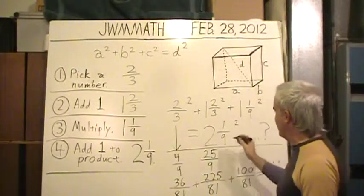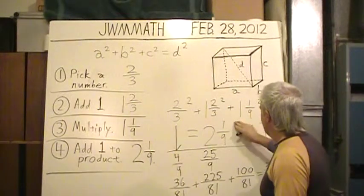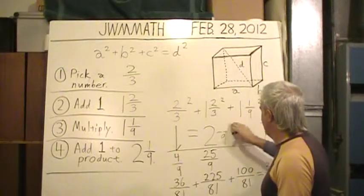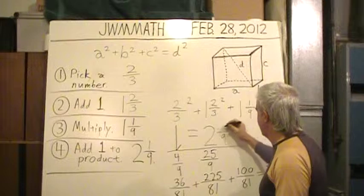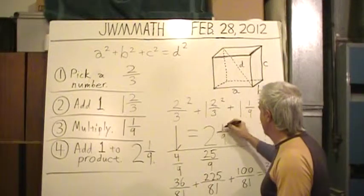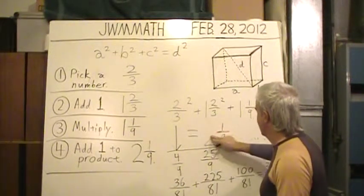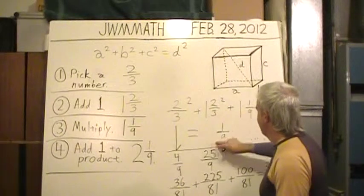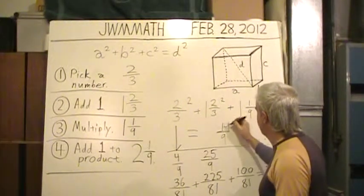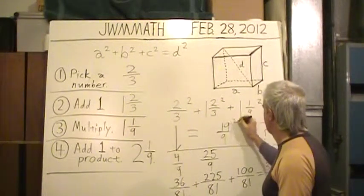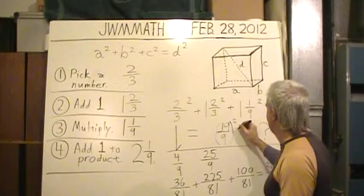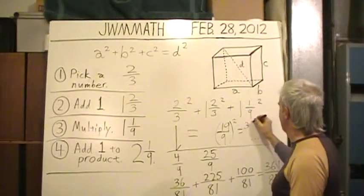Two and one-ninths squared. Let's do the math. Two and one-ninths, let's see, how many ninths is that? Two times nine is eighteen plus one is nineteen. So, I'll rub this two out. Two and one-ninths is really nineteen-ninths. This whole thing is squared. Nineteen times itself, three-sixty-one.